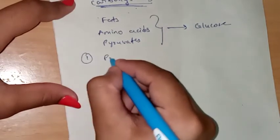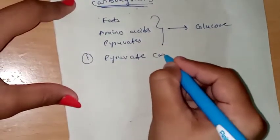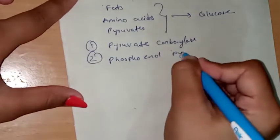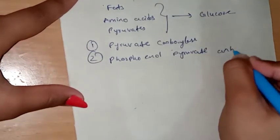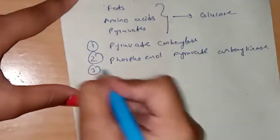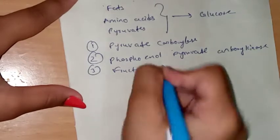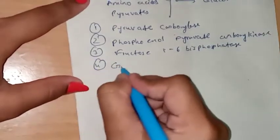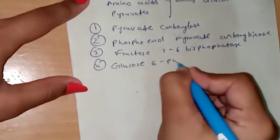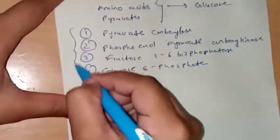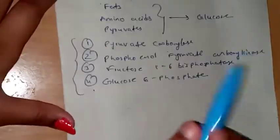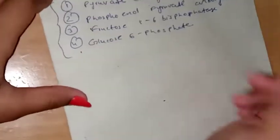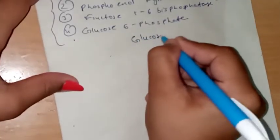The key gluconeogenic enzymes are: first, pyruvate carboxylase; second, phosphoenolpyruvate carboxykinase; third, fructose-1,6-bisphosphatase; and fourth, glucose-6-phosphatase. These four are the main key enzymes for the gluconeogenesis process, and you must remember all four.